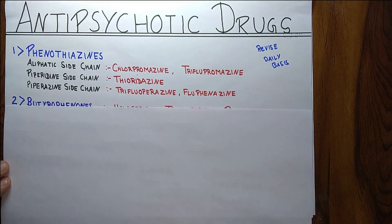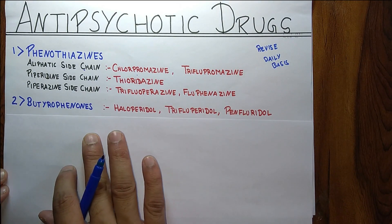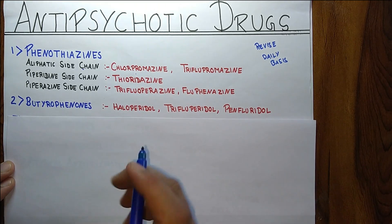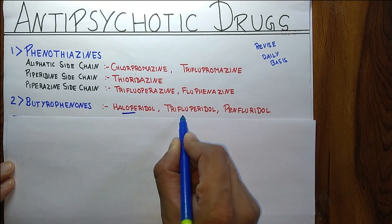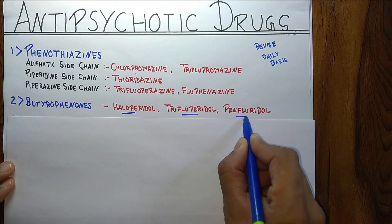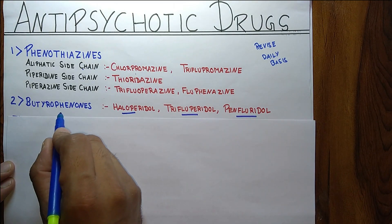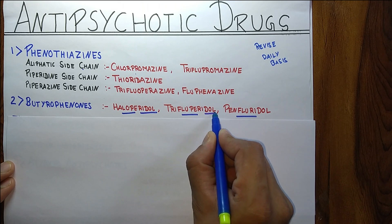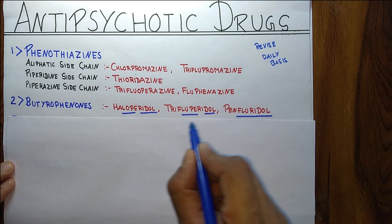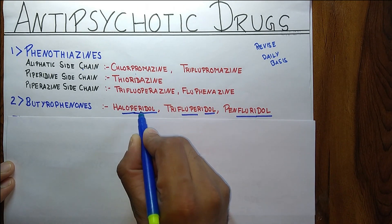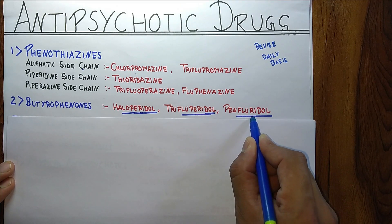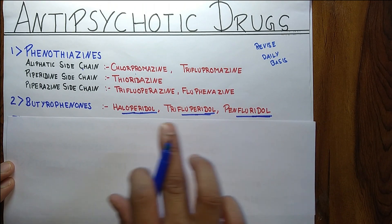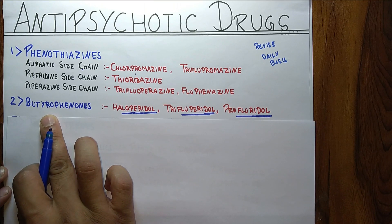Next one is Butyrophenones. There are three drugs in this class: Haloperidol, Trifluperidol, and Penfluperidol. The Butyrophenone class has '-peridol' or '-dol' common in these drug names, so it is easy to learn that they all end in '-peridol'.